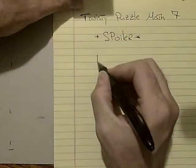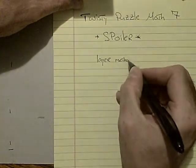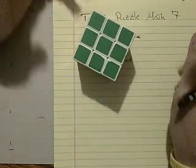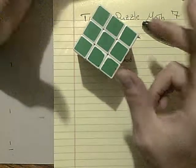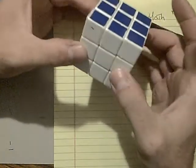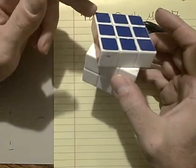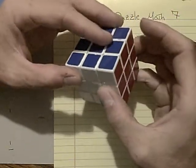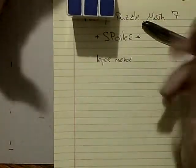So probably the way you learned to solve it is the layer method. And there are a number of variants with how you solve it, but generally there's a cross, and then three or four corners, and then some way of solving the middle four edges, and then either a corners-first or an edge-first approach to the remaining layer. So that's a classic way people learn.